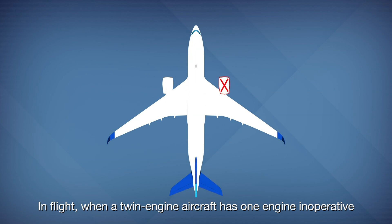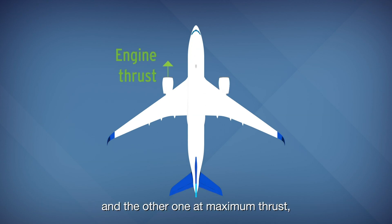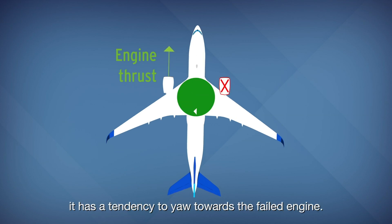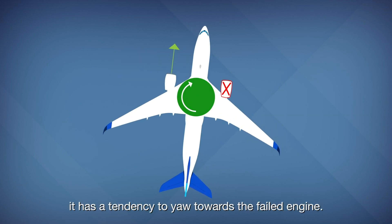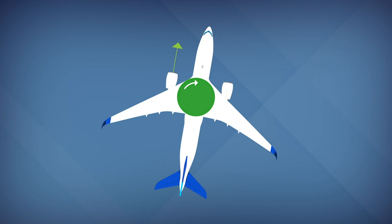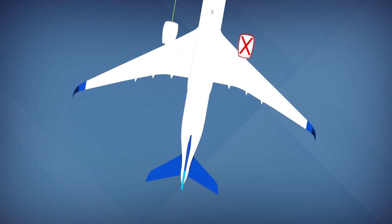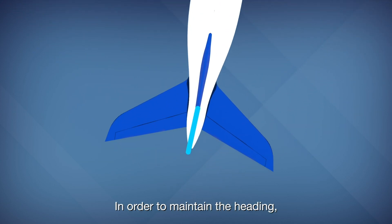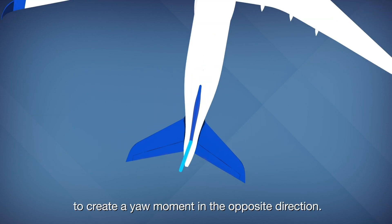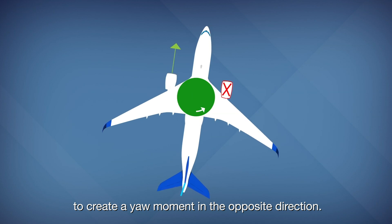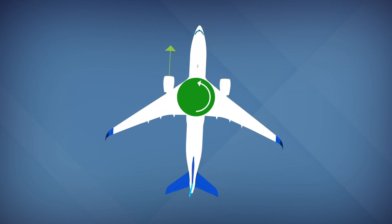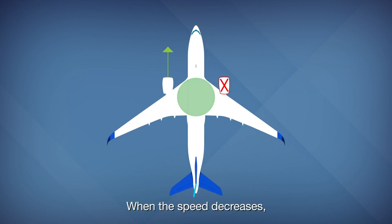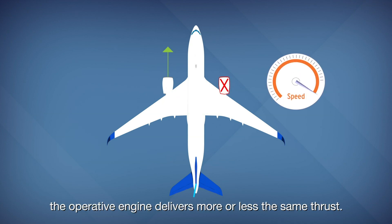In flight, when a twin-engine aircraft has one engine inoperative and the other one at maximum thrust, it has a tendency to yaw towards the failed engine. When the speed decreases, the operative engine delivers more or less the same thrust.